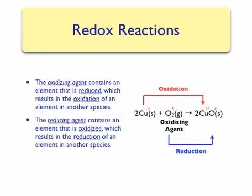We can also identify a reducing agent. Reducing agents usually contain an element that is oxidized, which resulted in the reduction of another species. In our sample reaction, copper is the reducing agent. Copper lost two electrons, which were picked up by the oxygen, causing the oxygen to be reduced. Therefore, we can identify copper as a reducing agent.